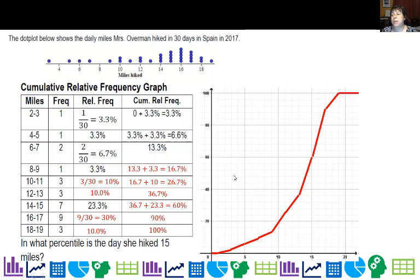So if I wanted to look at the 15 miles, I could actually look here and say, oh, that's at the 60th percentile because 60% of my values are at or below 15 miles, which is right there.